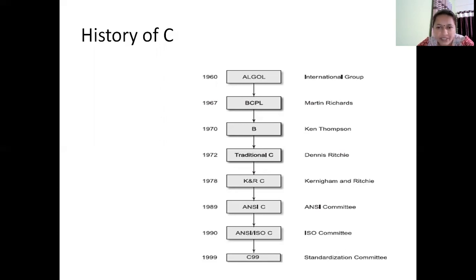Next, in 1972, Dennis Ritchie, a computer scientist working at AT&T Bell Laboratories in the US, developed the traditional C language. Since he used many of the features present in the B language, he named his new language C, because it was a better version of the language B.